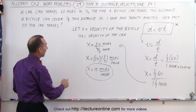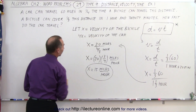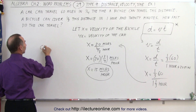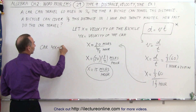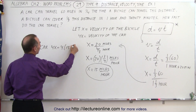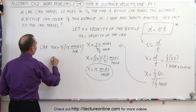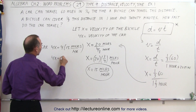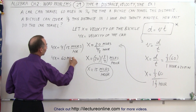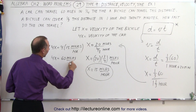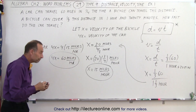Since x represents the velocity of the bicycle and 4x represents the velocity of the car, for the car we have 4x equals 4 times 15 miles per hour. Therefore, 4x equals 60 miles per hour, and that is the velocity of the car.